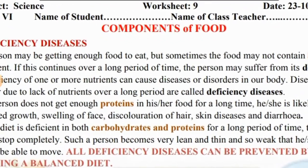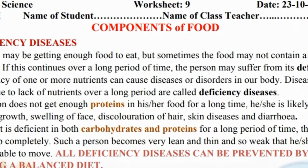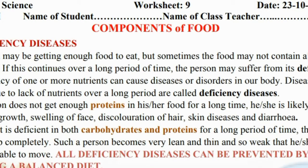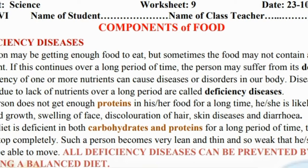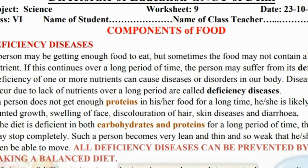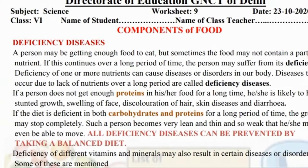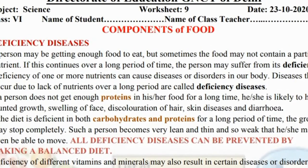Proteins, carbohydrates, vitamins, minerals, roughage, water, and fats. We saw which foods we get these nutrients from, and we need to maintain a balanced diet.